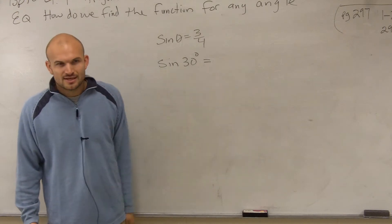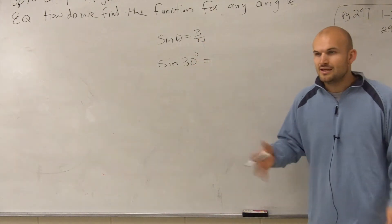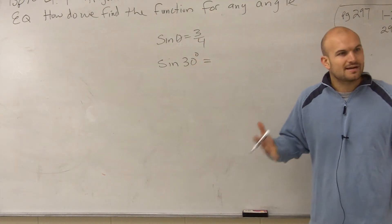Right, the sine of 30 degrees. And typically, though, Thomas, what did that represent, the sine of 30 degrees? What did that represent? Think about the unit circle. What did that sine of 30 degrees represent?